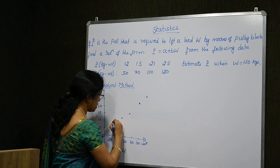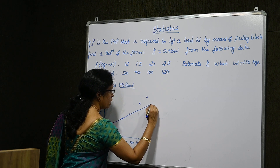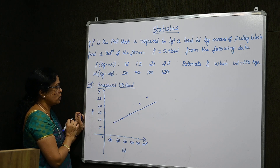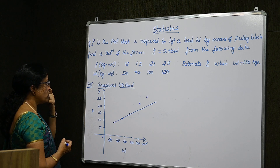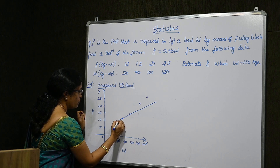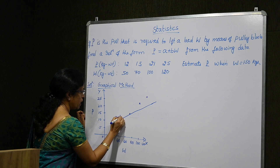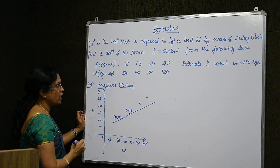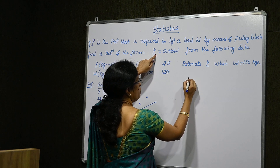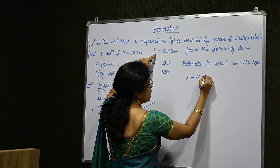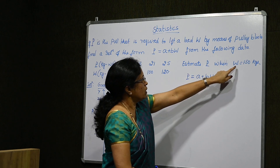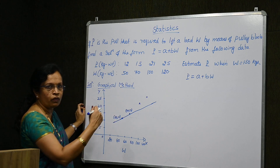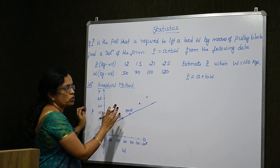What I do is try to join these points by means of a straight line which covers the maximum number of points. It is not necessary to cover all points — minimum two points should be covered. The coordinates of one point are 50 comma 12. The relationship we need to find is P is equal to A plus BW, and to estimate P when W is 150 kg, we need the values of parameters A and B.